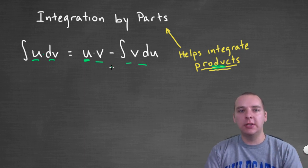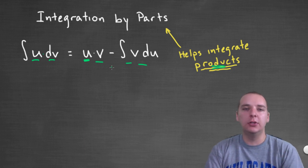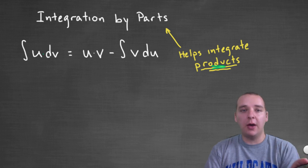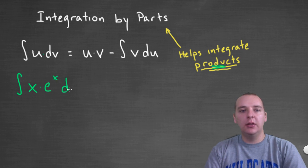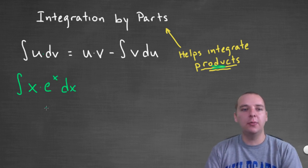I've got a lot of questions to answer about this guy. Before I get into the why it works or where did it come from or how to choose u or how to choose dv, let me start just by showing you how to do it with just a very basic example. Let's say we had the integral of x times e to the x.